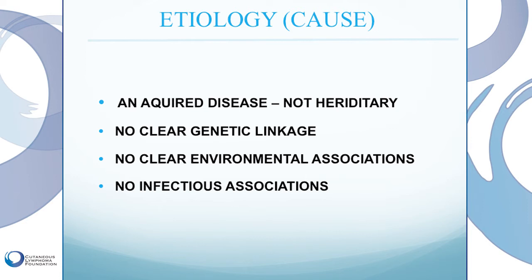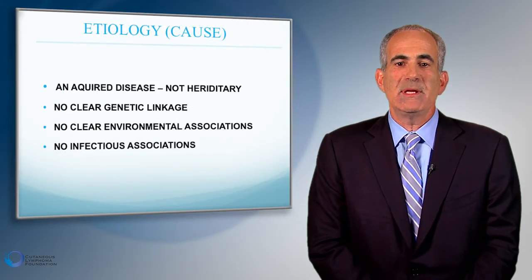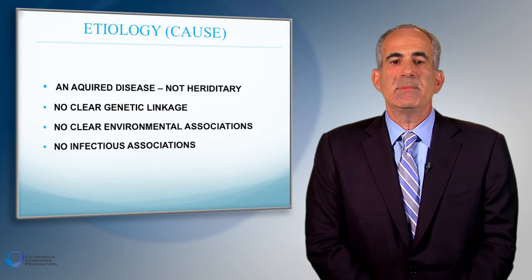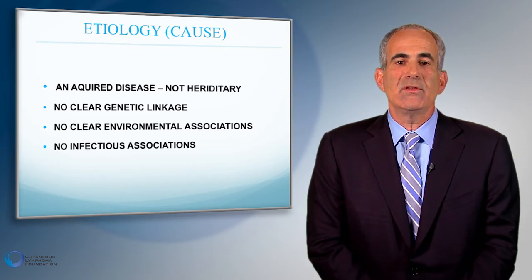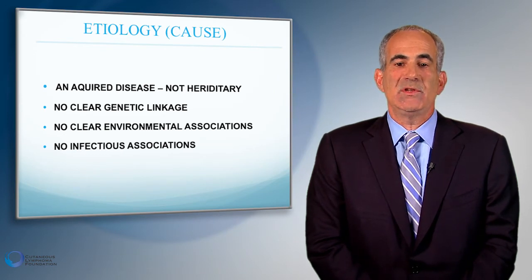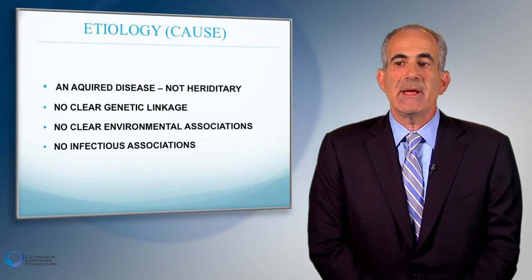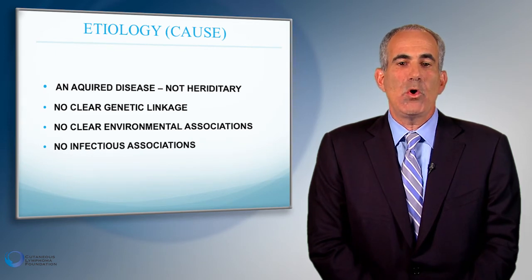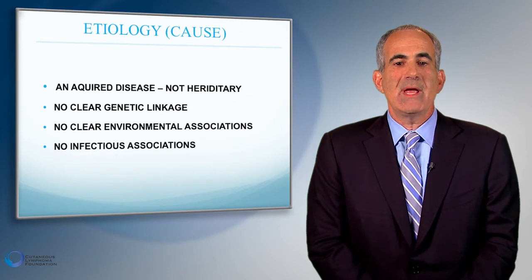The next topic is etiology or causes of the disease. All lymphomas are an acquired disease — they're not hereditary. We don't know the true definitive genetic basis, and we don't have a definitive set of genes known to be responsible for the risk of cutaneous lymphomas. We know that immune genes are involved and that some people's immune genes may play a more significant role in processing environmental factors that may contribute to the development of cutaneous lymphoma. There has been speculation about environmental associations — different infectious diseases, viruses, bacteria — that may cause or contribute to cutaneous lymphomas, but we have no definite link.